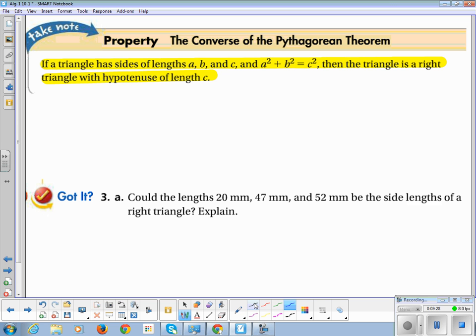So number 3 says, could the lengths 20, 47, and 52 millimeters be the side lengths of a right triangle and explain. Please, my darlings. Anytime it says explain, you need to have a sentence there. Okay, so my options are 20, 47, and 52. Which is the biggest one? 52 is the biggest one. So he gets to be the hypotenuse.